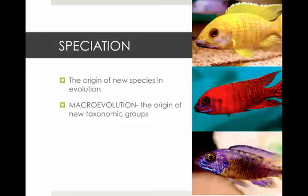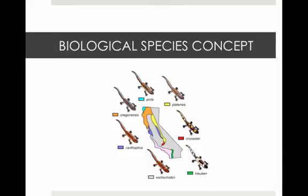A species is an interbreeding group of individuals who produce healthy fertile offspring. Speciation is the origin of a new species in evolution. The biological species concept is this definition of a species, where individuals can produce healthy fertile offspring.